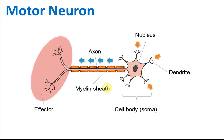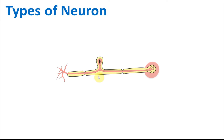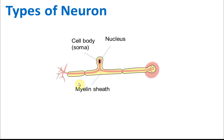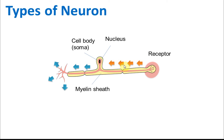This is the sensory neuron. It has a cell body in the middle and a nucleus. The sensory neuron is connected to the sensory organs — the receptor. Like the motor neuron, it has a myelin sheath to speed up transmission. The receptor detects stimuli and generates an impulse, which is sent to the cell body. The cell body then sends the impulse out. The part receiving the impulse is the dendrite and the part sending it out is the axon.